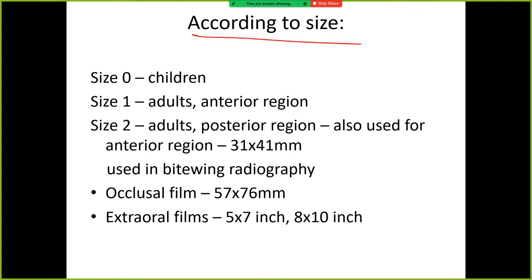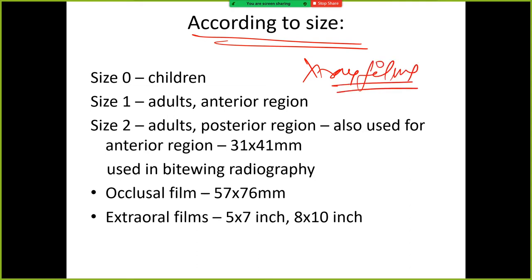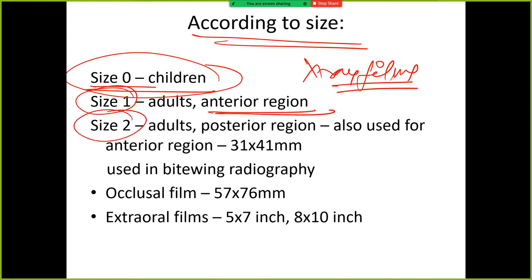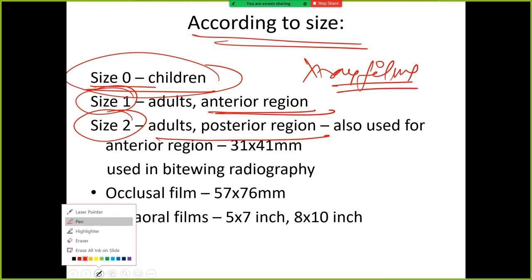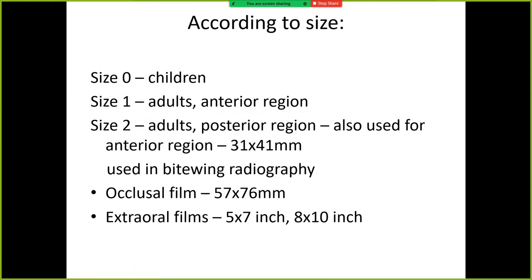We can also classify x-ray films according to size. Size 0 is for children. Size 1 is for adults in the anterior region. Size 2 is for adults in the posterior region. But actually in our OPD, we use the same x-ray — size 2 — for both anterior and posterior regions.